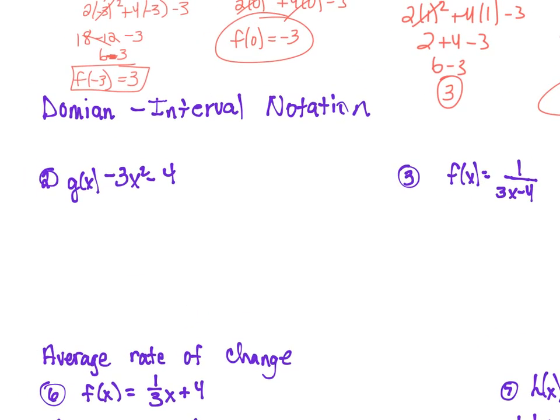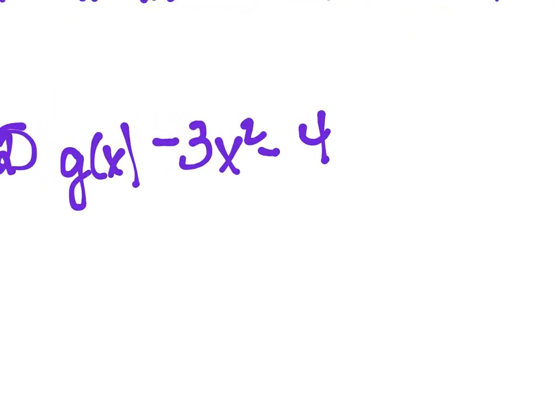When we're talking about domain, there are three things you have to be careful of. First, you cannot have a variable in the denominator. Second, you cannot have a square root with a variable underneath. Third, watch out for a square root in the denominator. For the first example, there's no variable in the denominator, no square root to worry about — so all real numbers work. Your answer would be negative infinity to positive infinity.